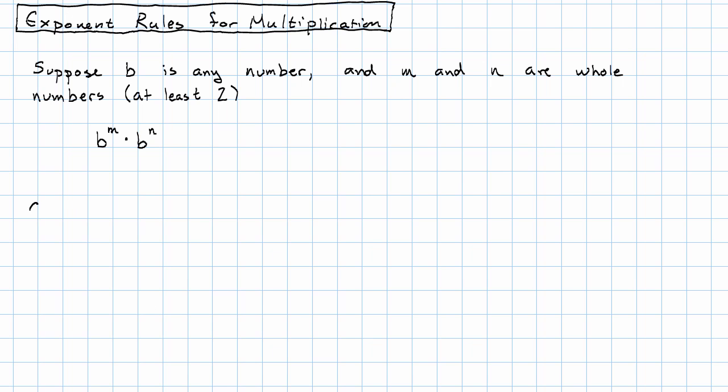Let's look at an example to see if we can figure out what will happen. Let's say we try with b is 3, m is 3, and n is 4. So we have 3 to the 3rd times 3 to the 4th.